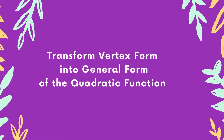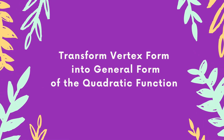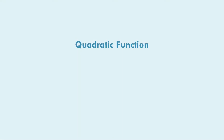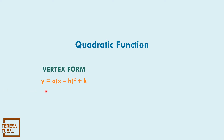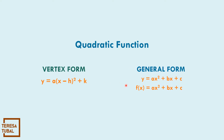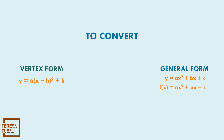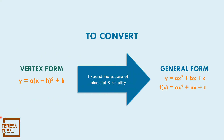Our lesson is about transforming vertex form into general form of the quadratic function. The vertex form is y equals a times the quantity x minus h squared plus k, while the general form is y equals ax squared plus bx plus c, or y equals f of x. To convert from vertex form into general form, we expand the square of the binomial and then simplify.